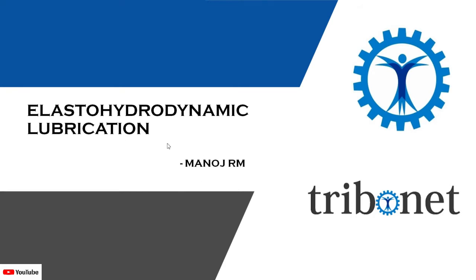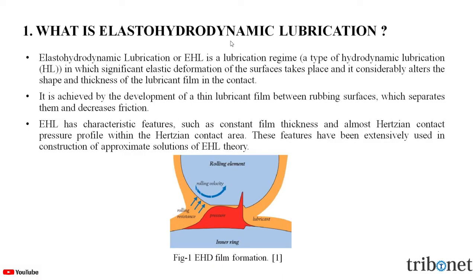What is elasto-hydrodynamic lubrication? Elasto-hydrodynamic lubrication, or EHL, is a lubrication regime — a type of hydrodynamic lubrication in which significant elastic deformation of the surfaces takes place, and it considerably alters the shape and thickness of the lubricant film in the contact. It is achieved by the development of a thin lubricant film between rubbing surfaces which separates them and decreases the friction. EHL has characteristic features such as constant film thickness and almost Hertzian contact pressure profile within the Hertzian contact area.